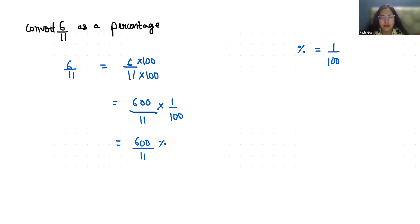Now divide. 11 times 5 is 55, and here is 50. 11 times 4 is 44, and here is 6. So we can write it as 54 whole 6 by 11 percent.